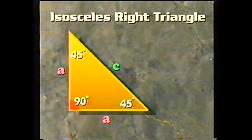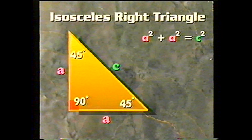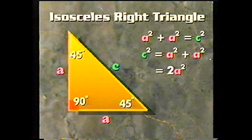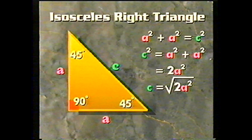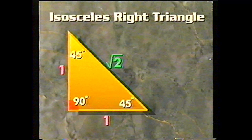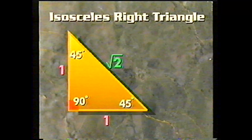The two legs are of equal length — let us call that length a, and let c be the length of the hypotenuse. By the Pythagorean theorem, a squared plus a squared equals c squared. A little algebra: c squared equals 2a squared, so c equals the square root of 2 times a. In summary, an isosceles right triangle has angles of measure 45, 45, and 90, and the sides are in the proportion 1 to 1 to the square root of 2.